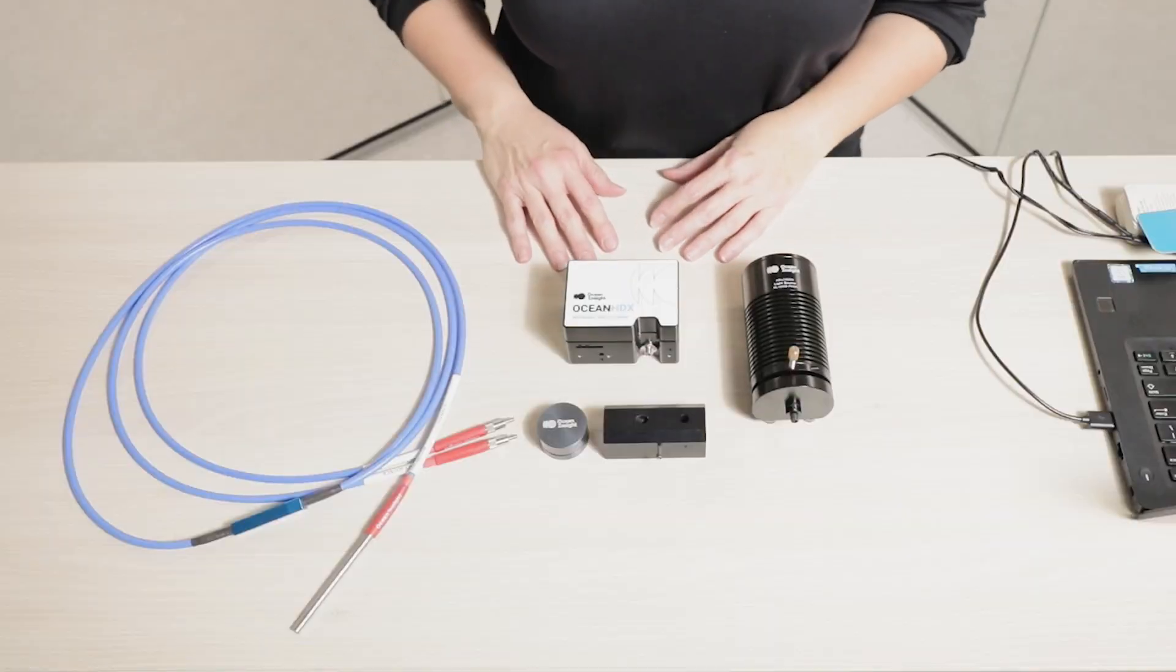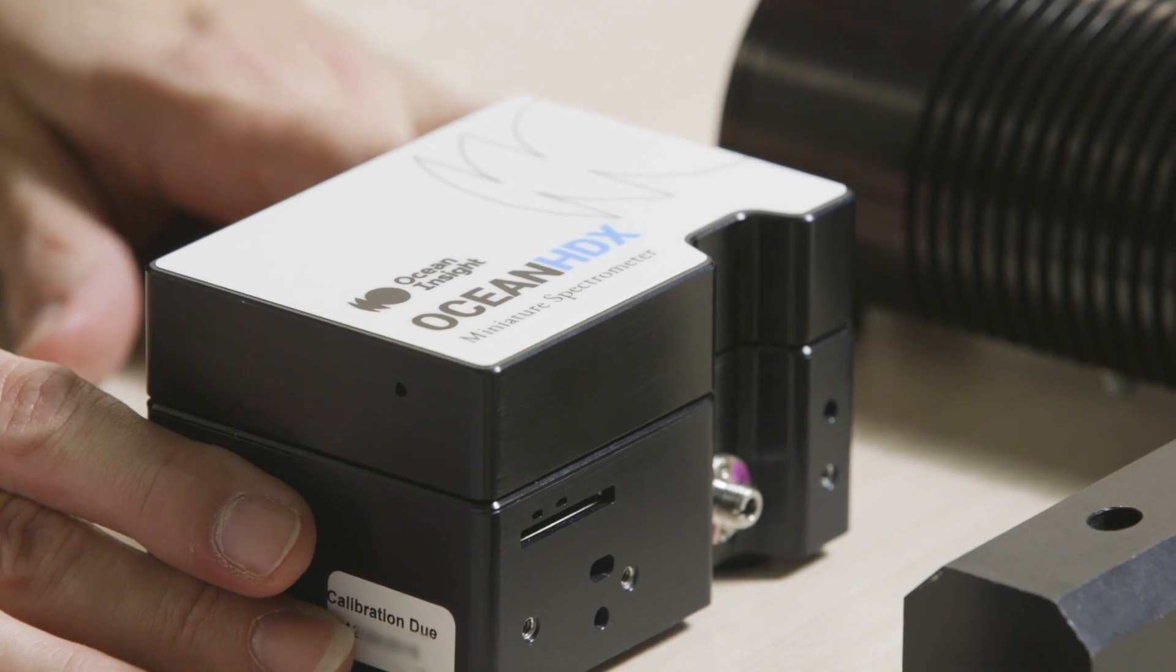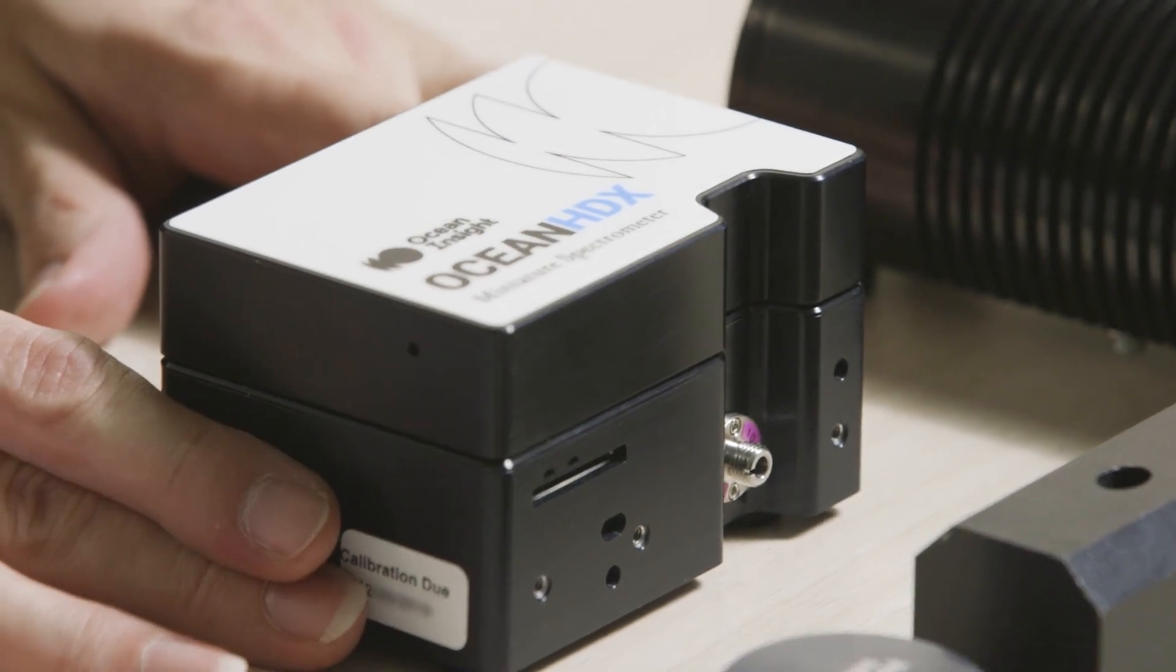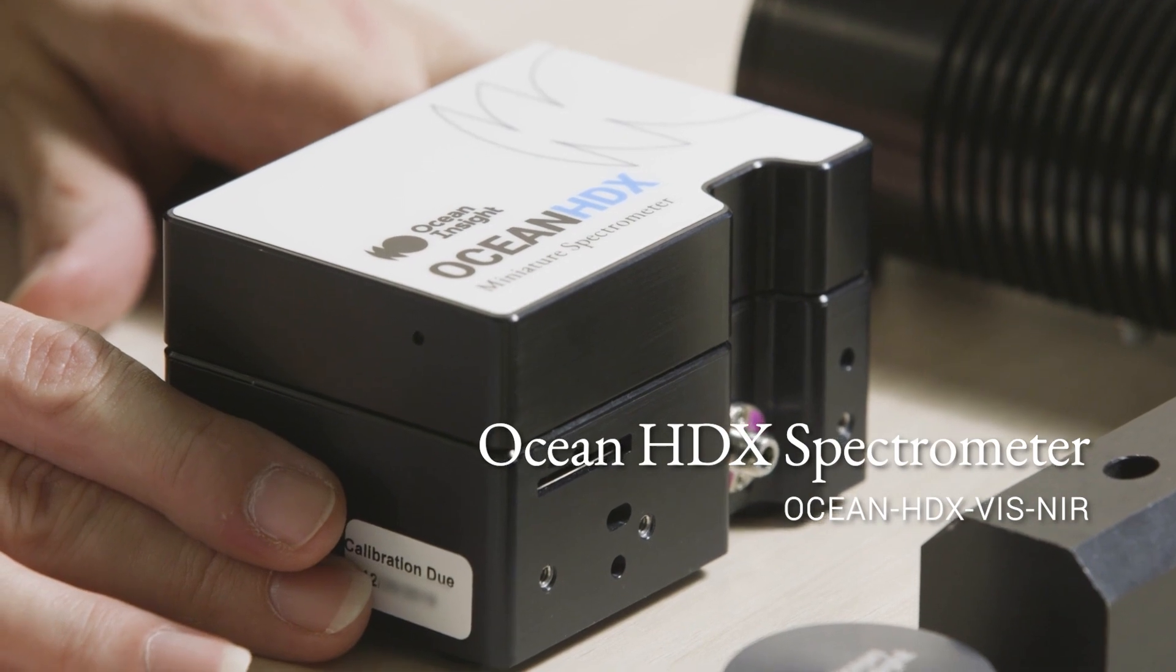The components that we're going to use for our reflectance measurement are our Ocean HDX spectrometer. This one is configured for the visible NIR wavelength region, which is ideal for the color measurement we're going to be making.